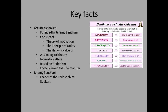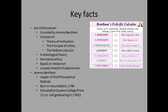A few key facts about Jeremy Bentham: he was a leader of the philosophical radicals, born in Houndsditch in 1748, educated at Queen's College from age 12, and graduated in 1763. He was the founder of University College London, died in 1832, and we'll refer to him as a British ethicist.